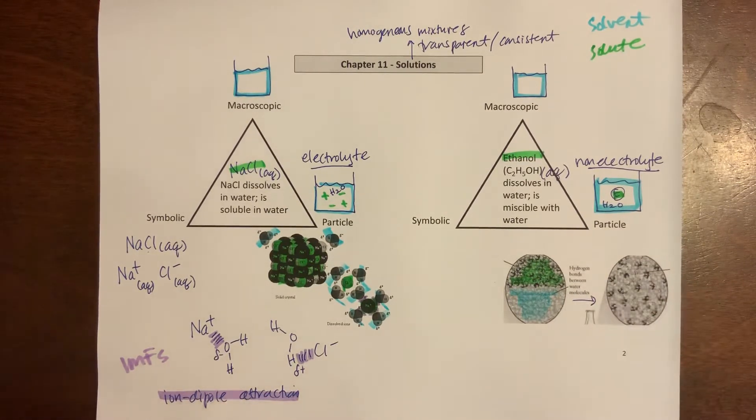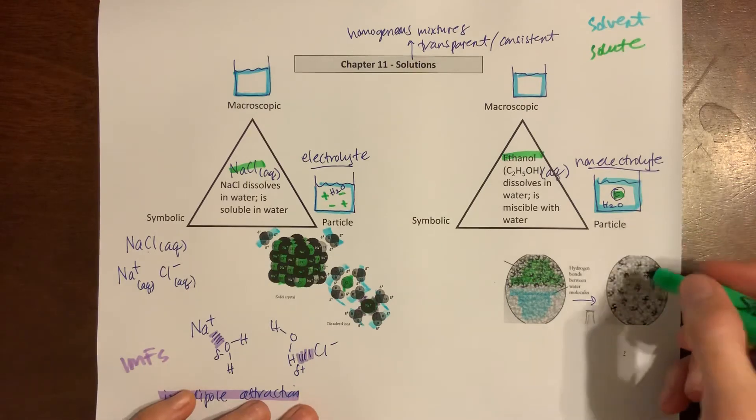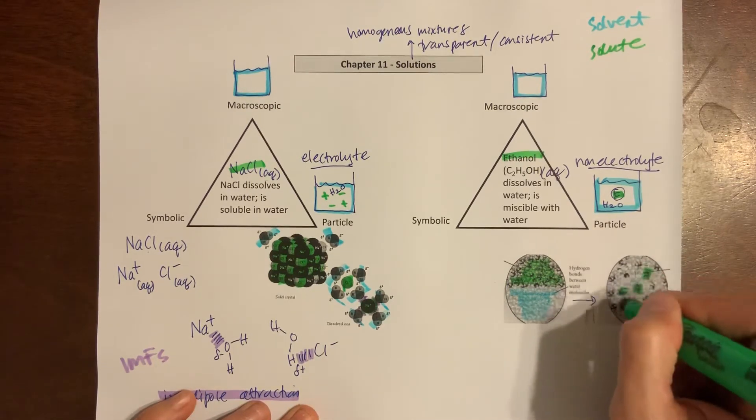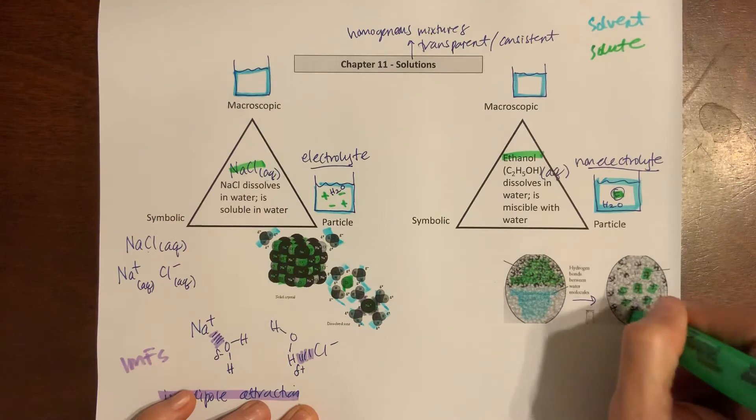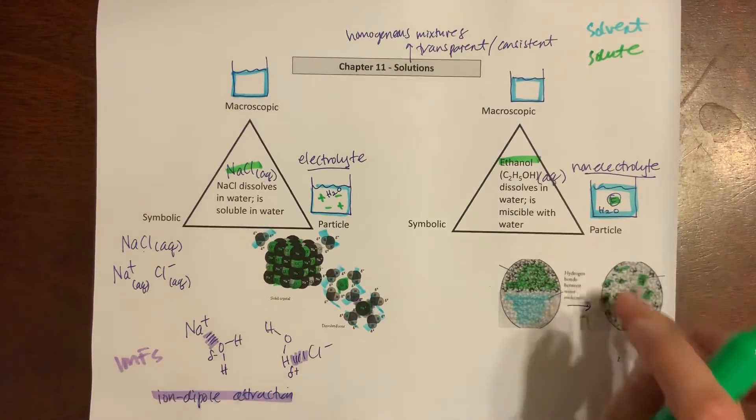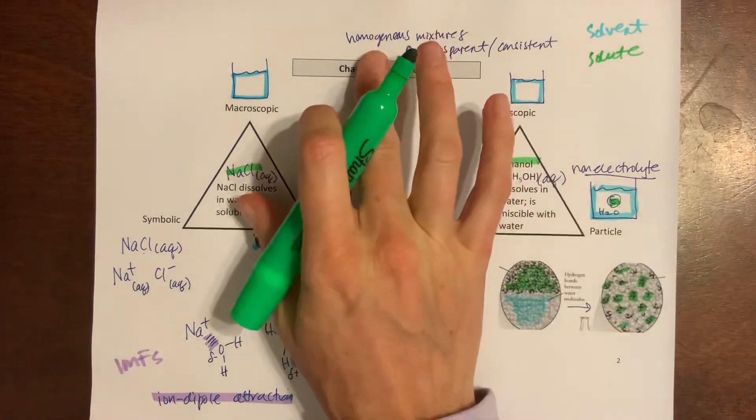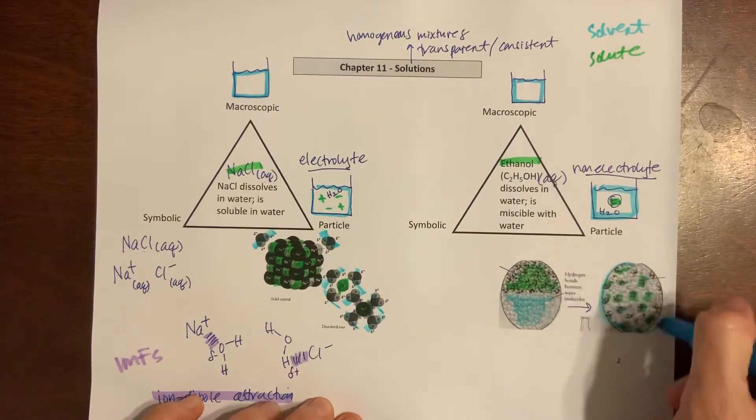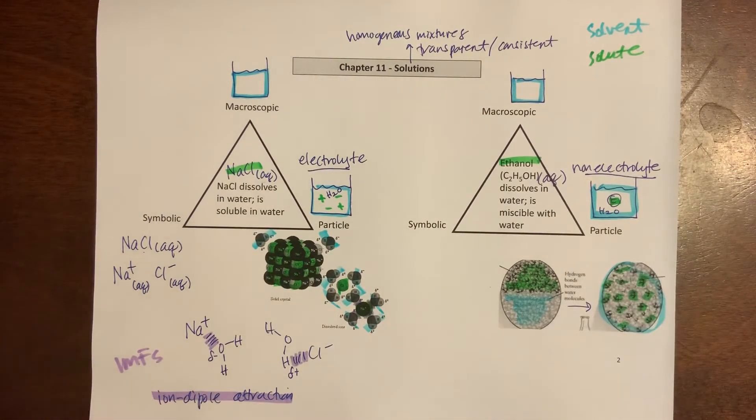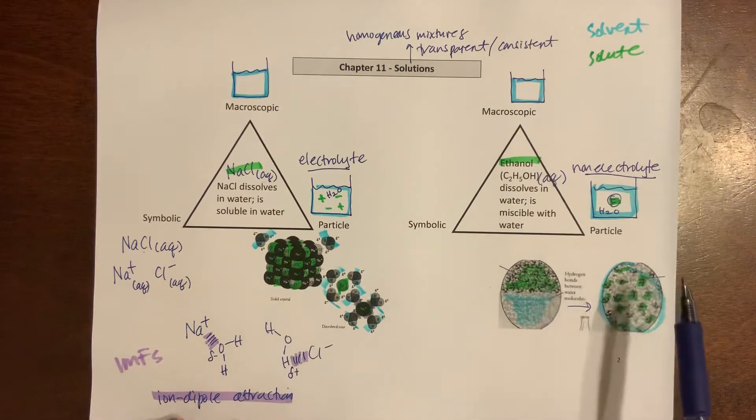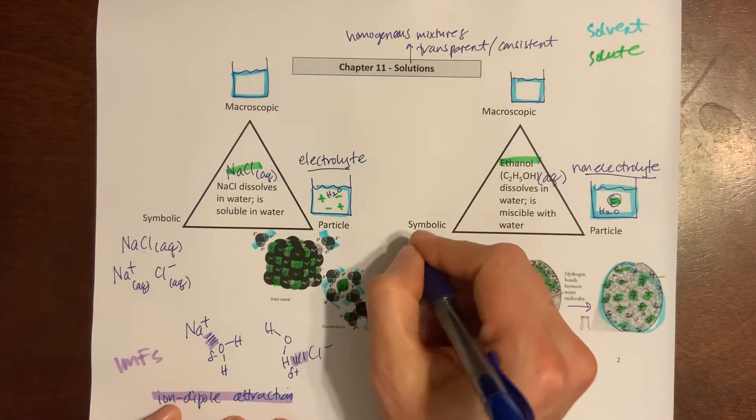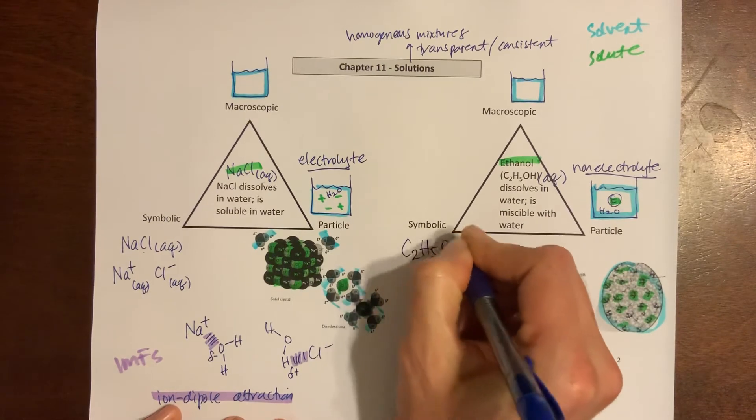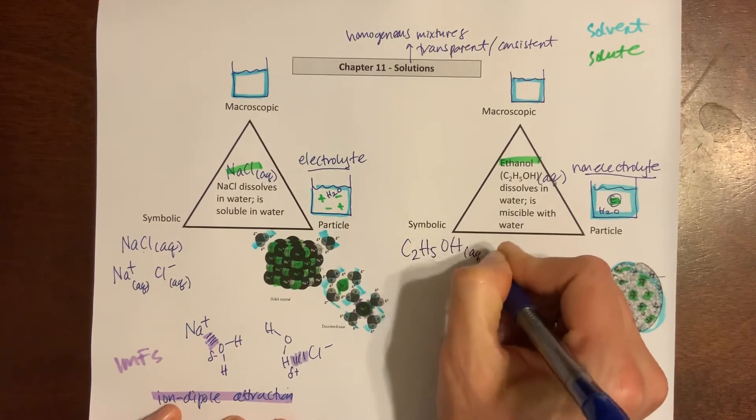These black molecules, these black globs, are your carbon in your ethanol. You've got the solute now dispersed evenly, homogeneously throughout that solvent which would be spread around all throughout there. If I want to write this symbolically, this is a molecular compound again. Here's the formula for ethanol.